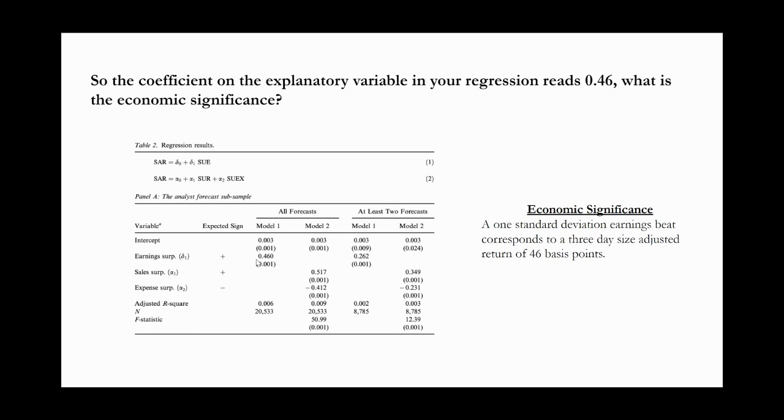The answer is that for a 1 standard deviation change in the earnings surprise, meaning if the firm beats analyst estimates by 1 standard deviation, that corresponds to a 46 basis point increase in the size-adjusted return. You might ask, what is a basis point? A basis point is 1 one-hundredth of a percent. So if a 1 standard deviation earnings surprise corresponds to a 46 basis point return, that means if firms beat analyst estimates by 1 standard deviation, then on average their stock price goes up 46 basis points.